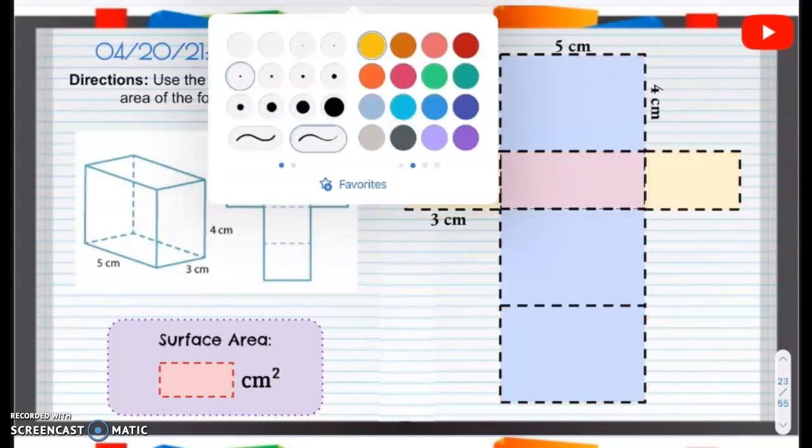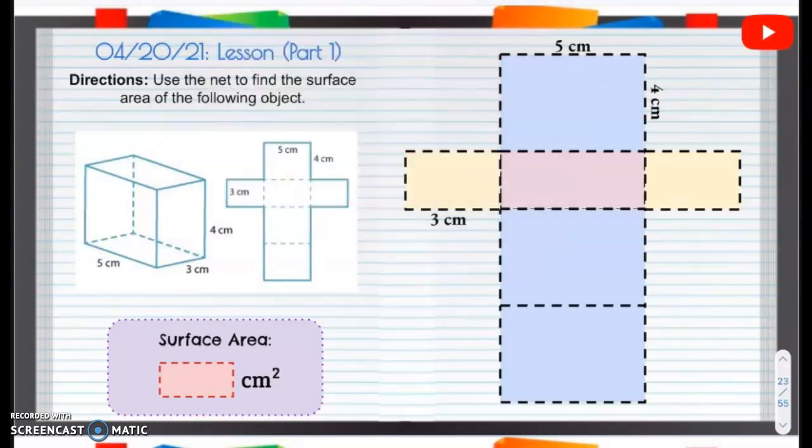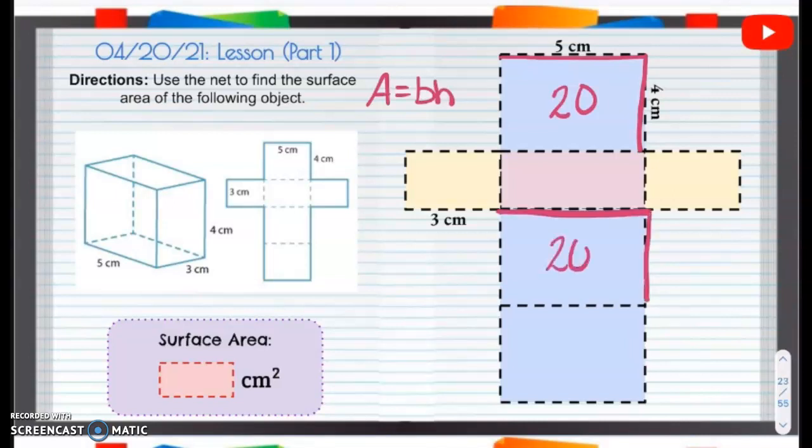So, base times height, for any time we have rectangles, it's going to be base times height. So in this case, for this square, we'll have 5 times 4. I'm sorry, rectangle. We'll have 5 times 4. That's 20. That is also going to be the same as this. 5 times 4. That is 20. 5 times 4. That is 20.